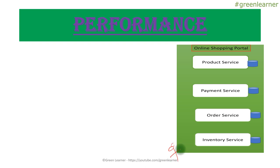Next is performance monitoring. Taking the same example — request goes through order service, product service, inventory service, and payment service — we measure how much time each service takes to process the request. By measuring performance we can identify bottlenecks, see which methods or lines of code take too much time, and work to improve them. Performance monitoring is about measuring the latency and timing that each individual service takes, which depends on network connection, data volume, and processing time.